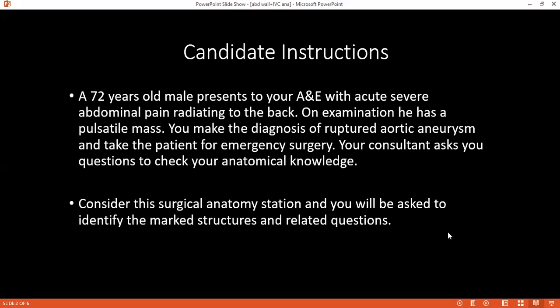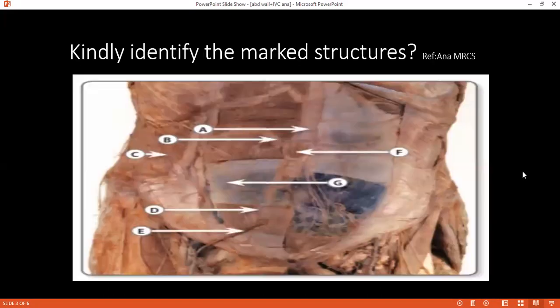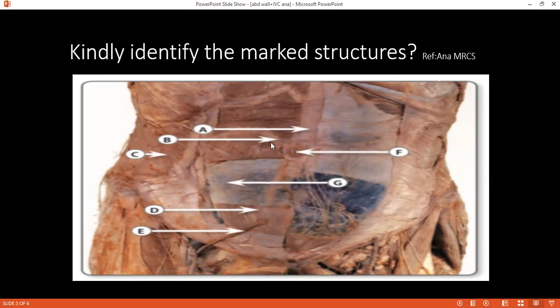Please tell me what image are you looking at? I'm looking at the abdominal cavity. Is it the abdominal cavity? Yes, the anterior abdominal wall, sorry — which has been dissected into two layers. Can you please identify the structures, if possible, from A to G? What is A? It's the linea alba. Very good. B, please?